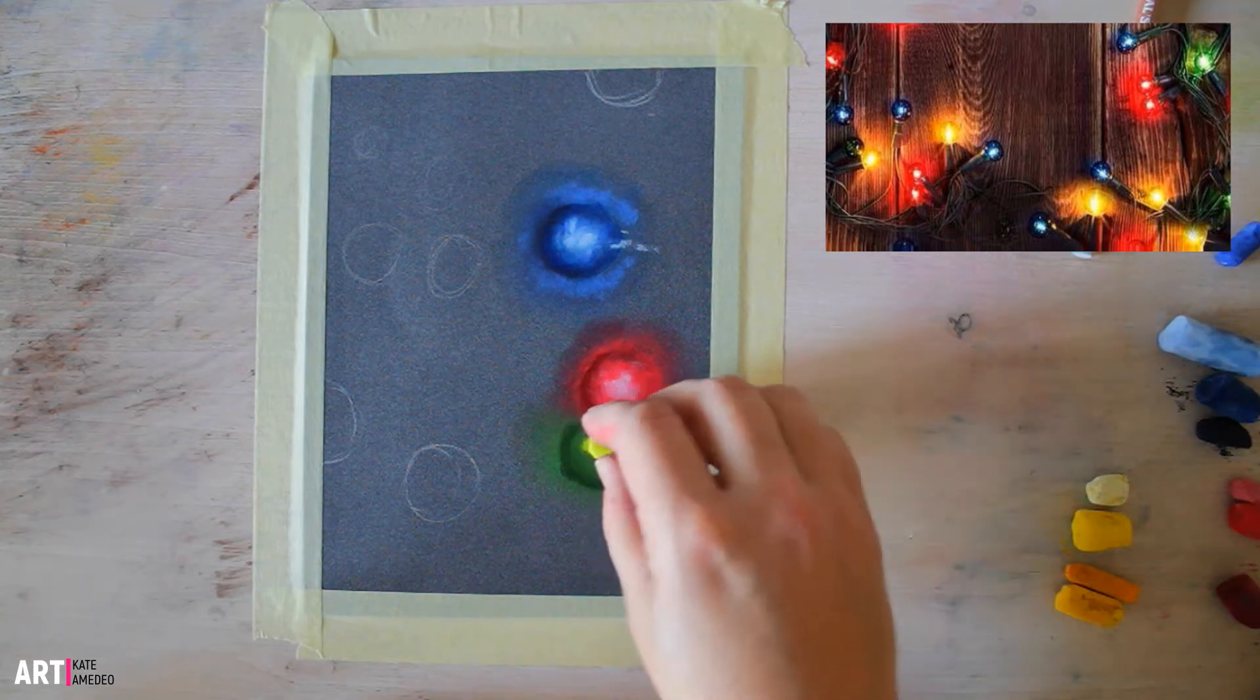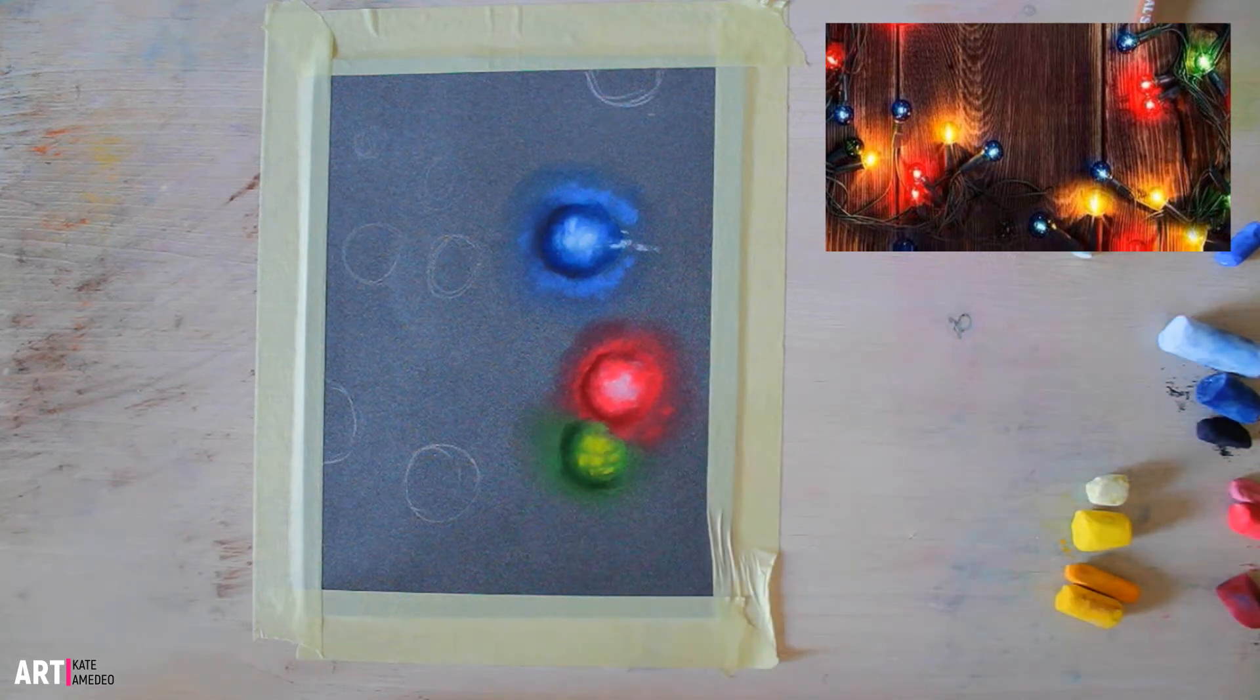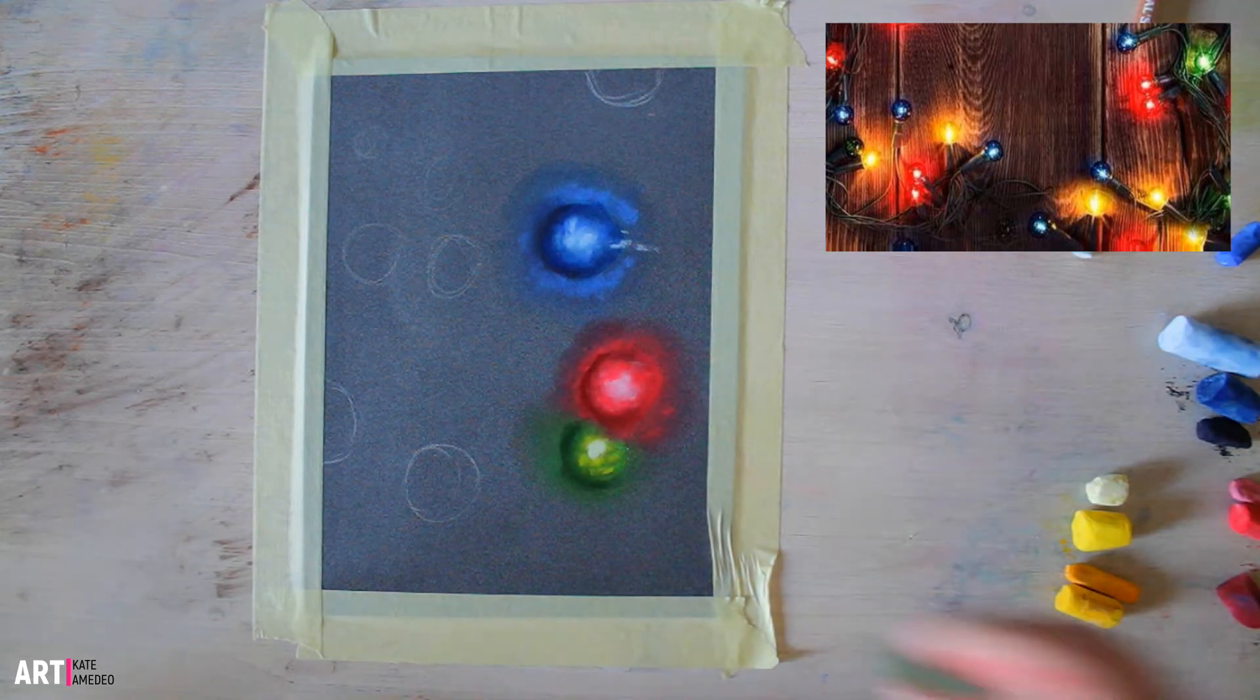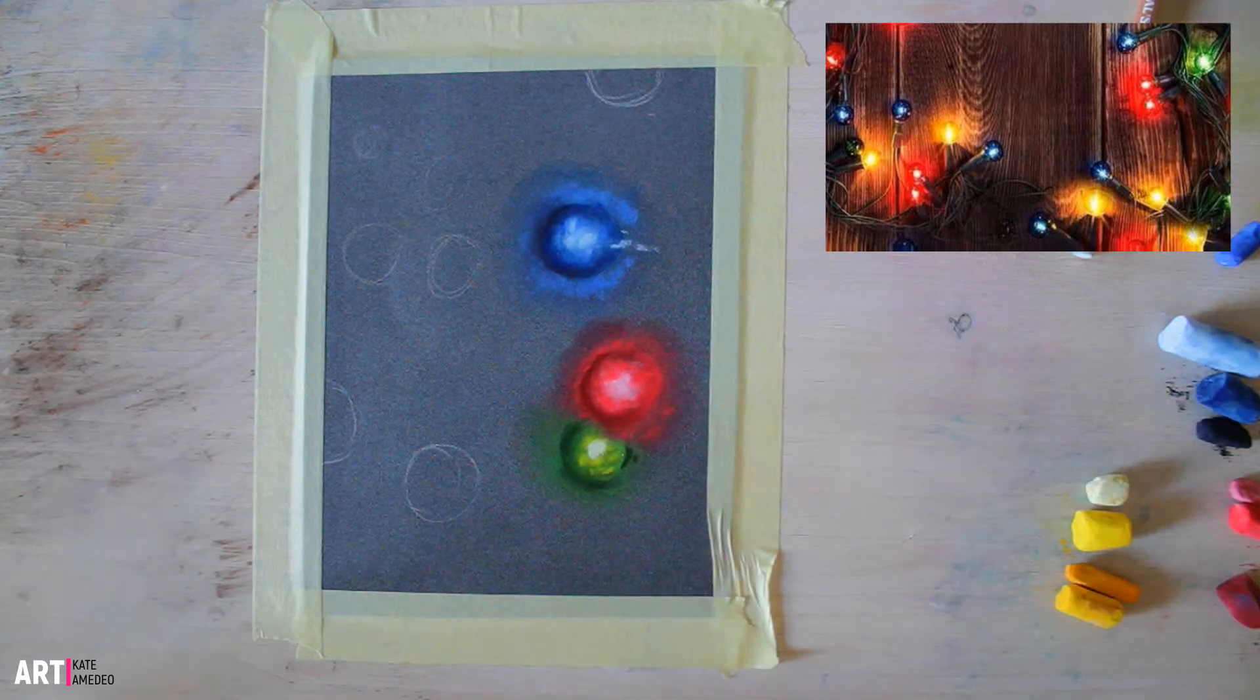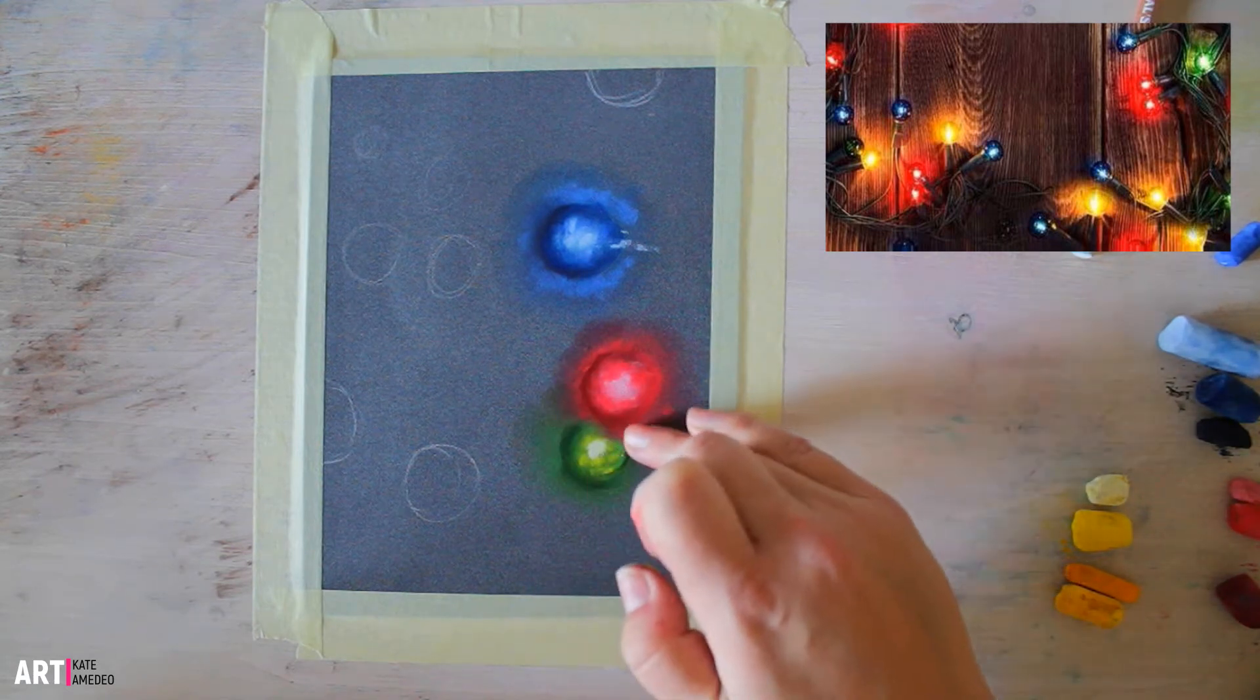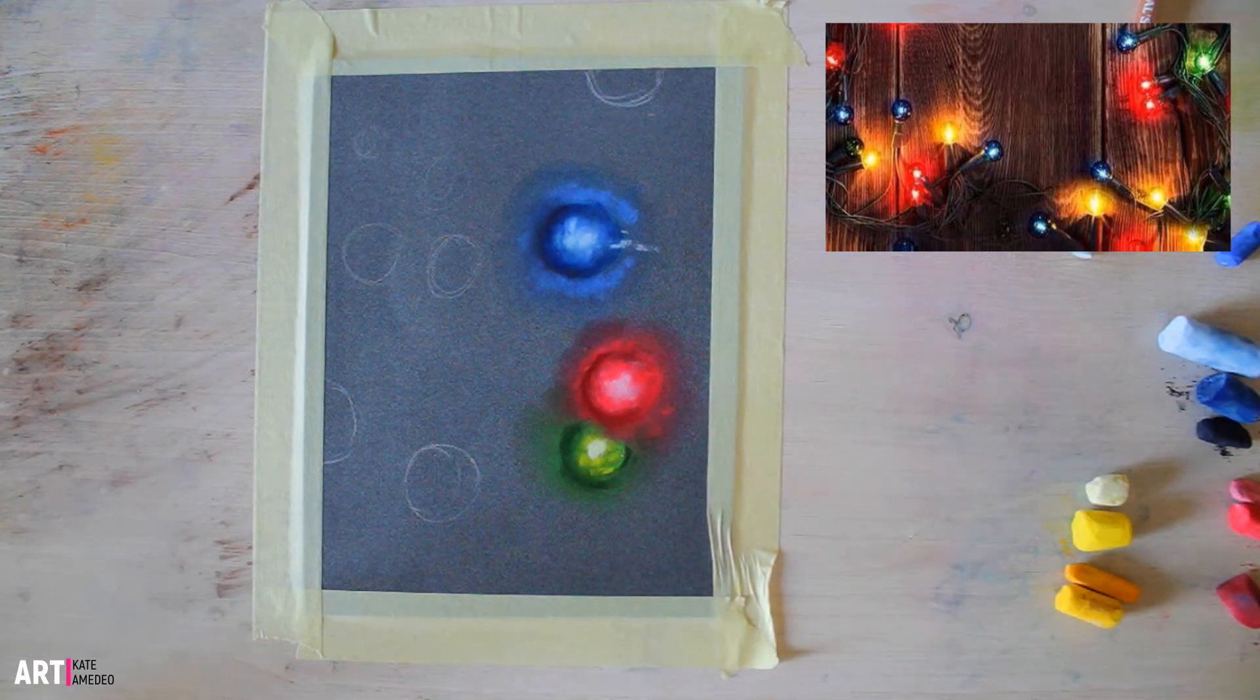Towards the center we have more saturated brighter colors happening, and blending it out. In the center here we will have that bright color. Here the two colors will meet, but don't blend them together too much, otherwise it might create mud.